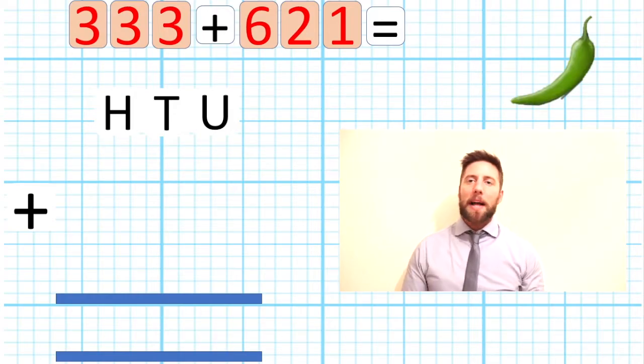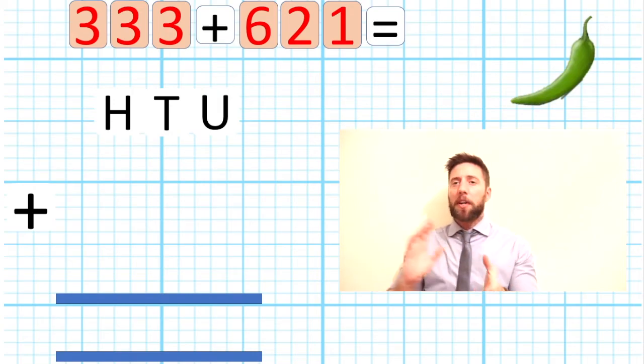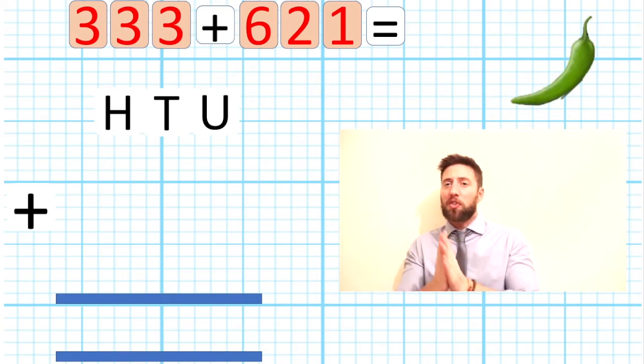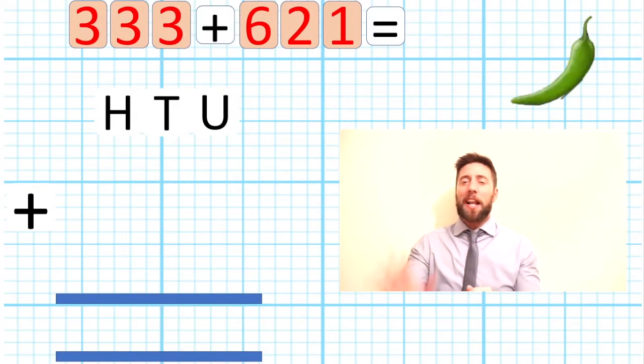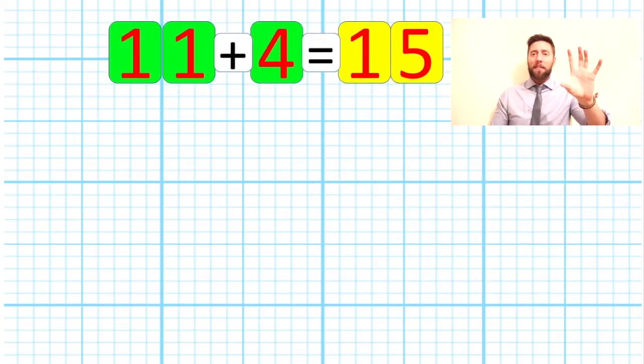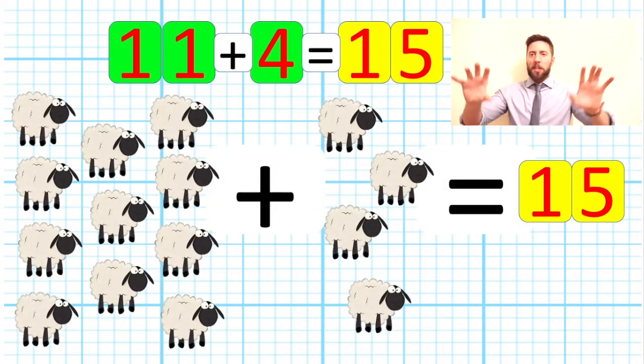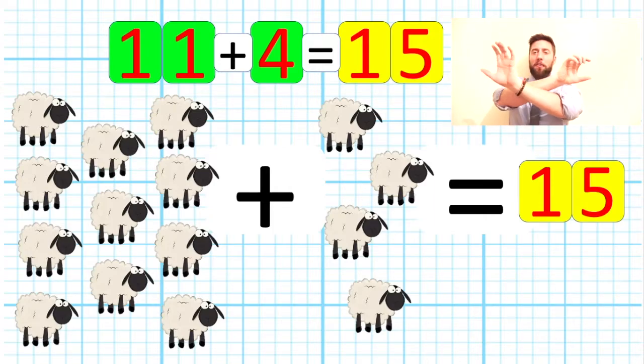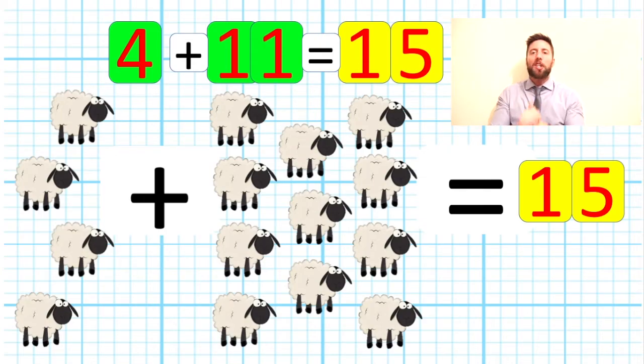But wait, does it matter which way round we put these numbers in our question? If we add 333 to 621, do we get the same as adding 621 to 333? Let's pause a second and let's look at it. If I have 11 add 4, we get 15. I can represent it here with these images. If I switch these around and add 4 add 11, I still get 15, and that is because addition is commutative. It doesn't matter which way around we put our question, we're going to get the same answer.